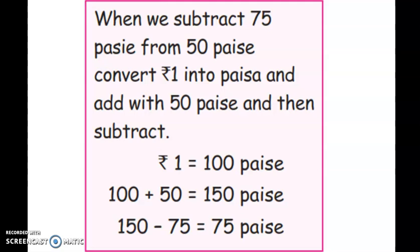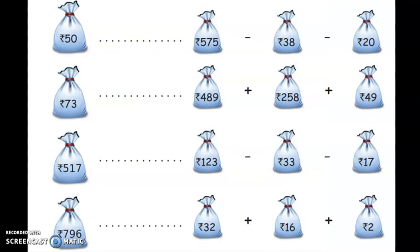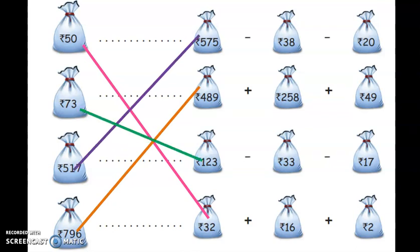Working through the subtraction: 100 plus 90 equals 85, continuing the calculation. The result here is 53. So 32 plus 16 plus 2 equals 53 — that is the calculation for the remaining balance.